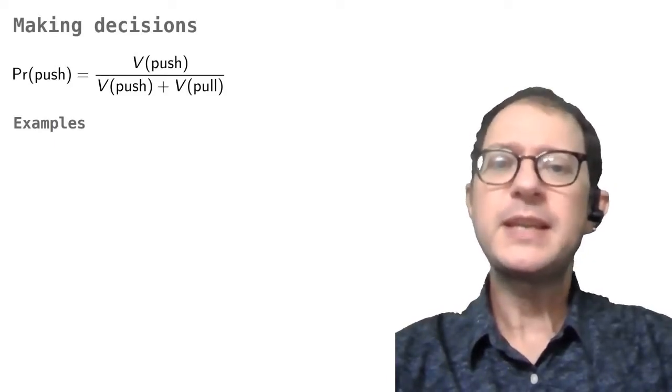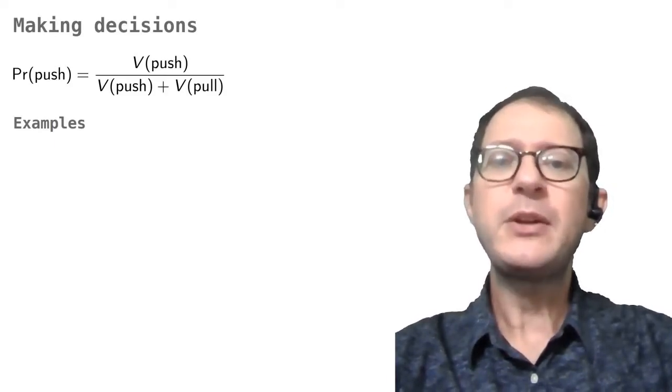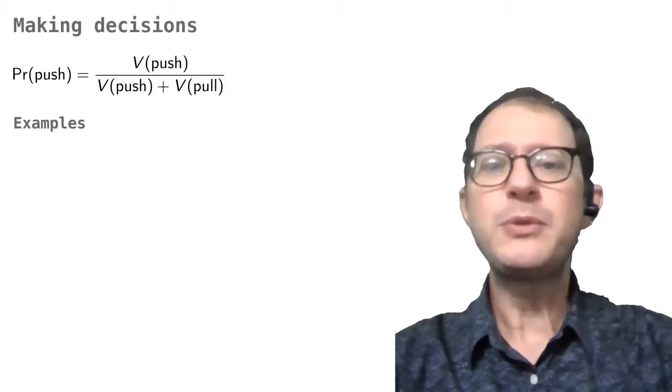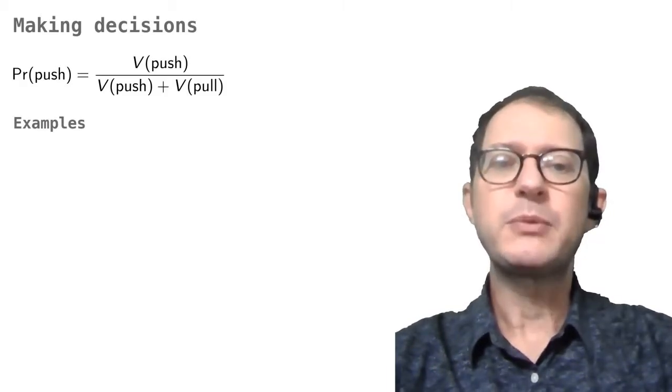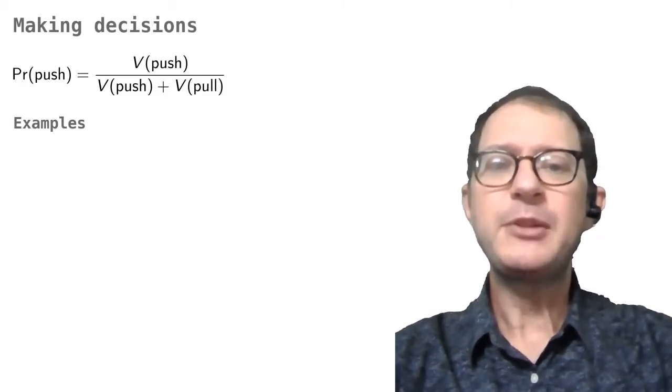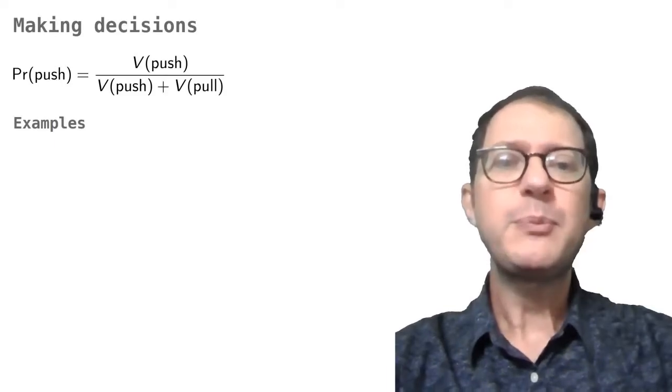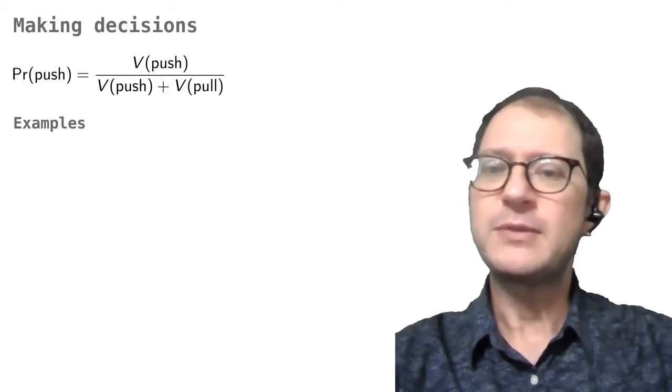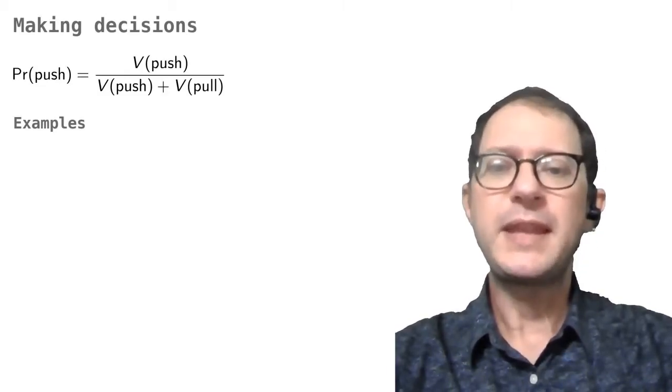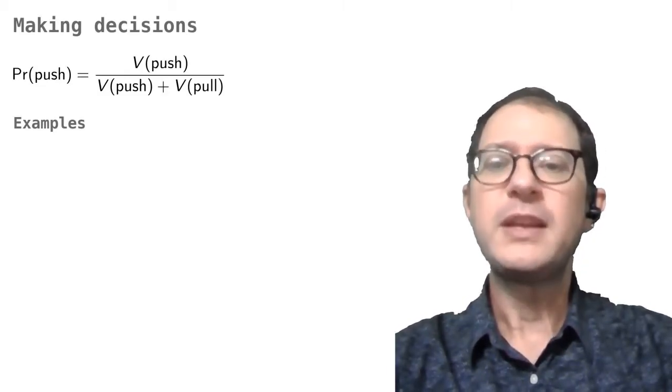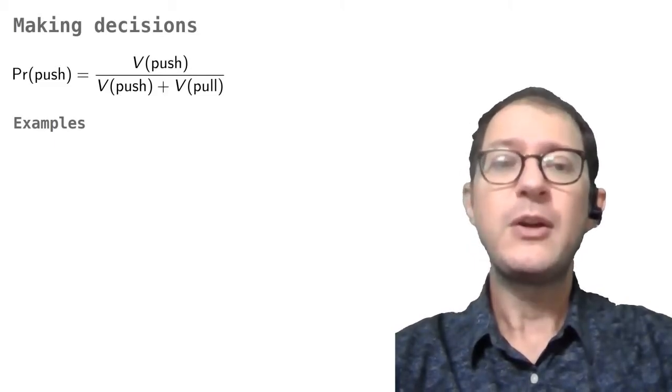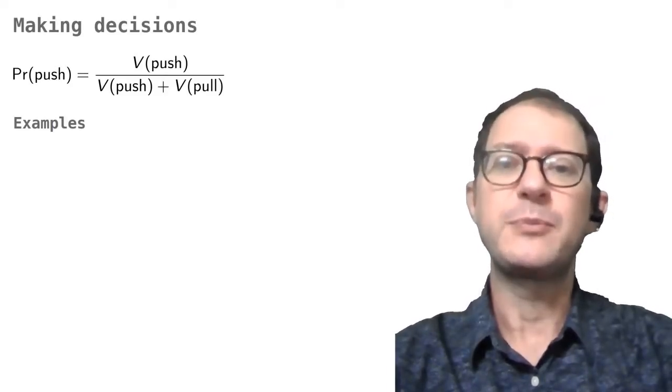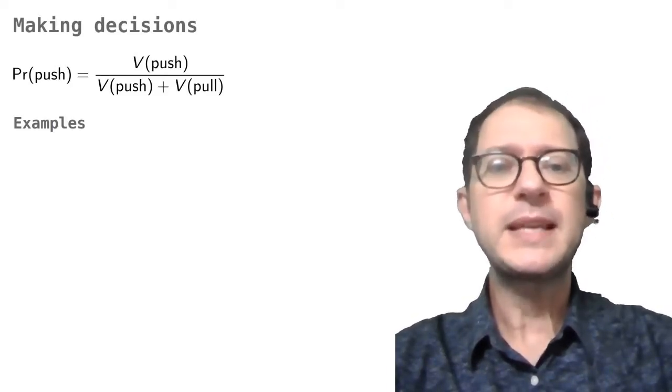For simplicity, assume that there are only two possible actions that I will call push and pull. So the animal has to choose between pushing and pulling something. A simple rule that works well is to say that the animal chooses each action in proportion to its value. The mathematical formula for two actions is this one on screen. The probability that the action chosen is push is the associative strength of push, V(push), over the sum of the associative strength of push and the associative strength of pull. Let's see why this makes sense with a few examples.